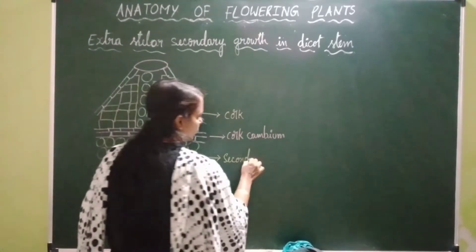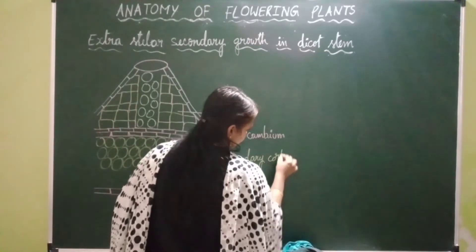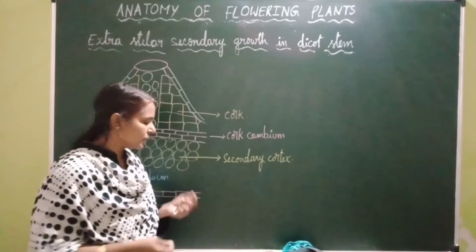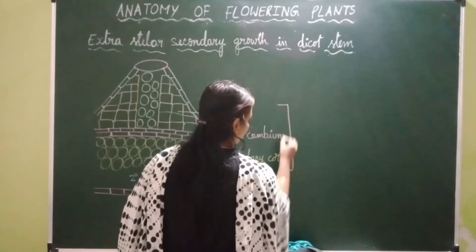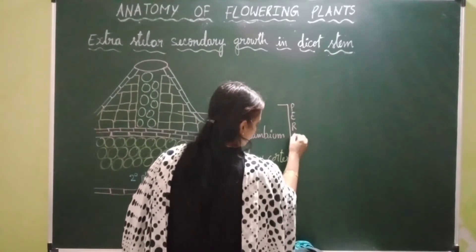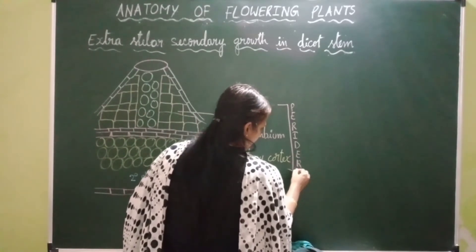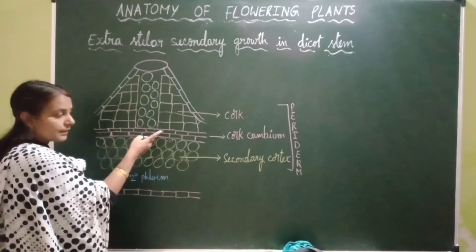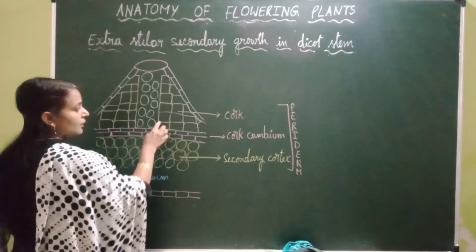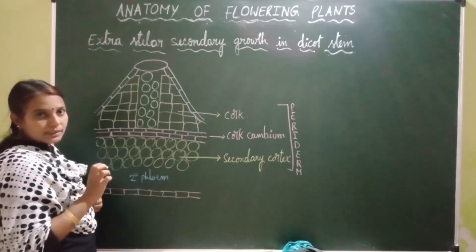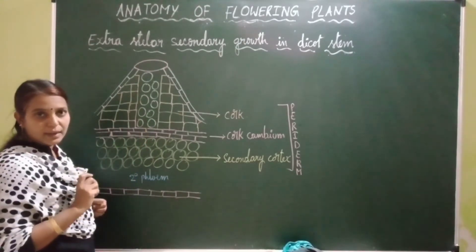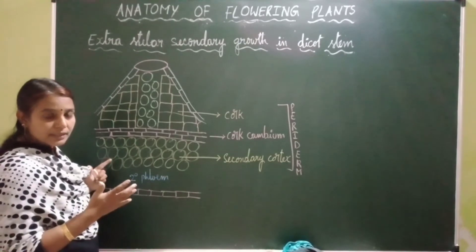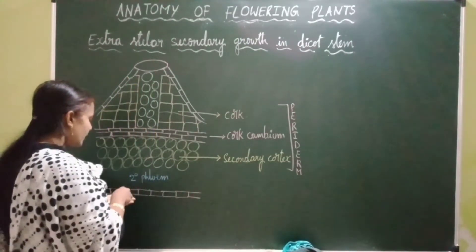Cork cambium and secondary cortex together represent periderm. Cork cambium is also called phellogen, cork is also called phellum, and secondary cortex is also called phelloderm. All three layers together are called periderm. Cork cambium is a couple of layers thick and cuts off cells towards the outer and inner sides. Along with thick-walled cork cells, cork cambium also produces some thin-walled parenchymatous cells. These thin-walled parenchymatous cells exert pressure towards the epidermis, causing the epidermis to break, resulting in the formation of a lens-shaped opening called a lenticel.